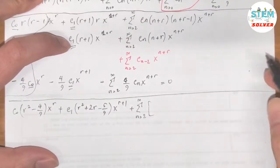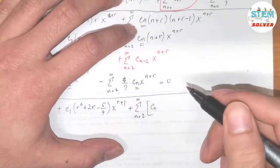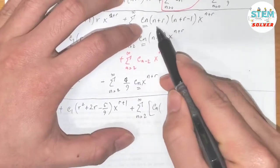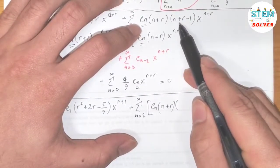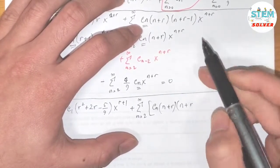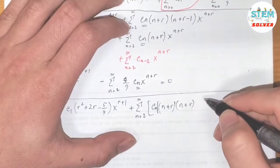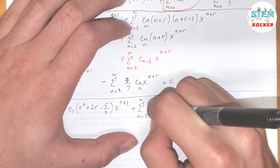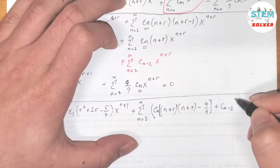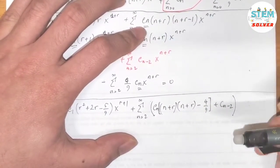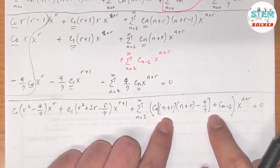For the power series from 2 to infinity, factor out cn and (n+r): we have (n+r)(n+r−1+1) minus 4/9, which simplifies to (n+r)² minus 4/9, plus cn−2. This gives us the system: the indicial equation c0·[r² − 4/9] = 0, the c1 equation c1·[r² + 2r − 5/9] = 0, and the recurrence relation cn·[(n+r)² − 4/9] + cn−2 = 0.